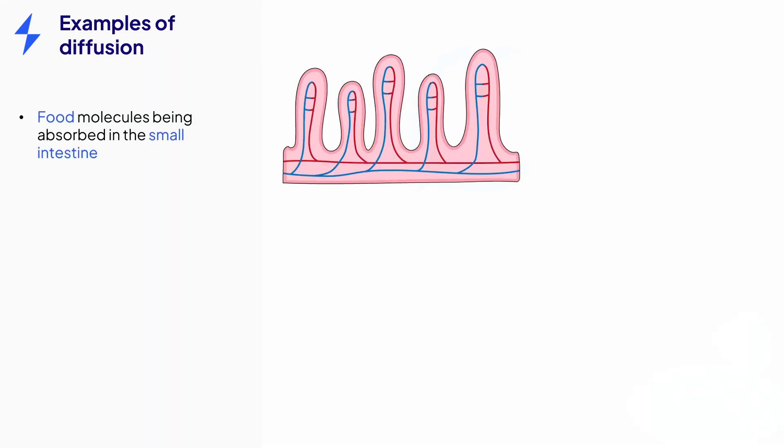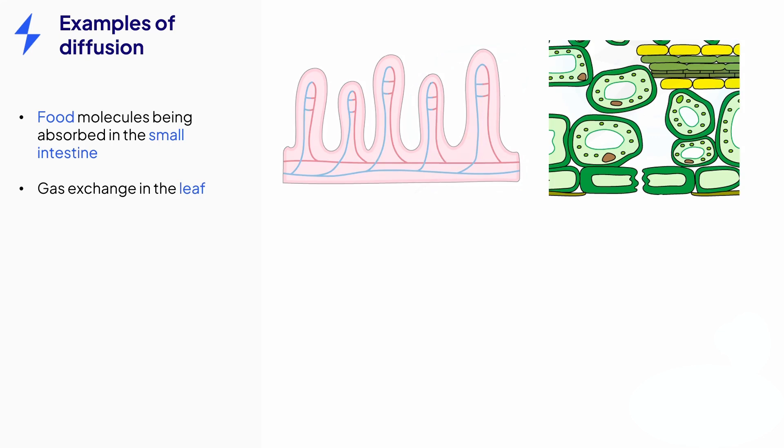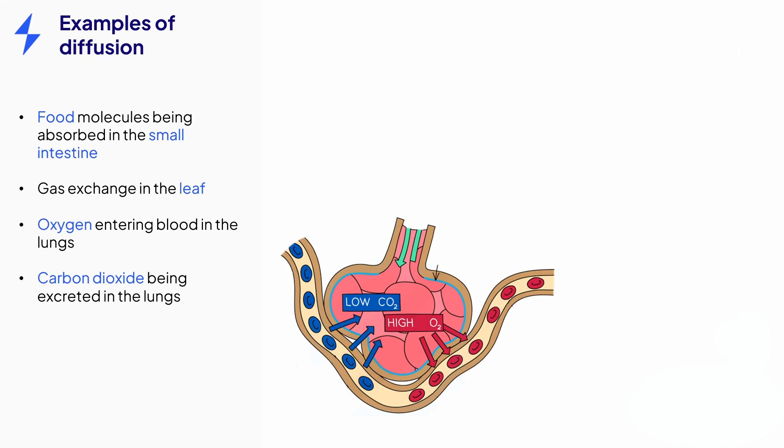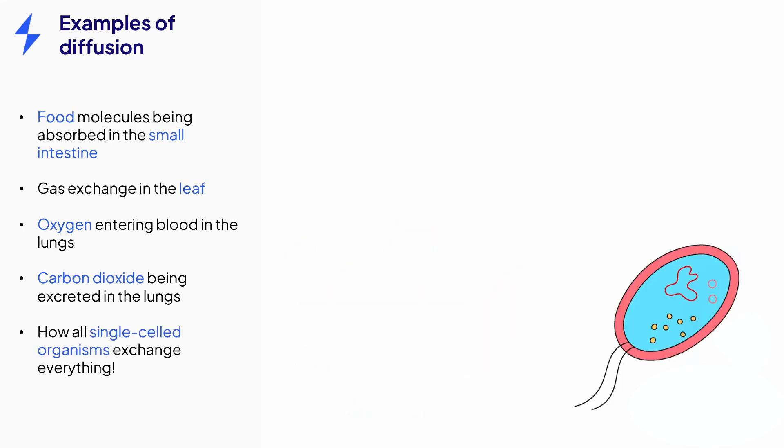Let's discuss some other examples of diffusion. Diffusion is used to absorb nutrient molecules through our small intestine into the surrounding blood. It is also how leaves exchange gases with the air during photosynthesis and respiration. Our lungs exchange gases with the air and blood too, obtaining oxygen and excreting the waste gas carbon dioxide. And as we've just discussed, single-celled organisms like this bacterium rely 100% on diffusion for all their exchanges with the environment.